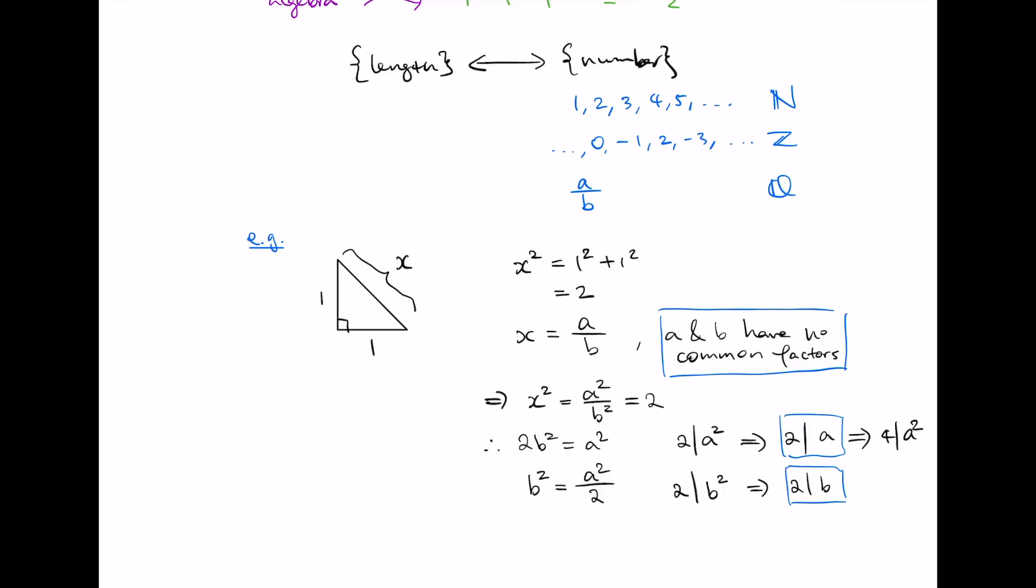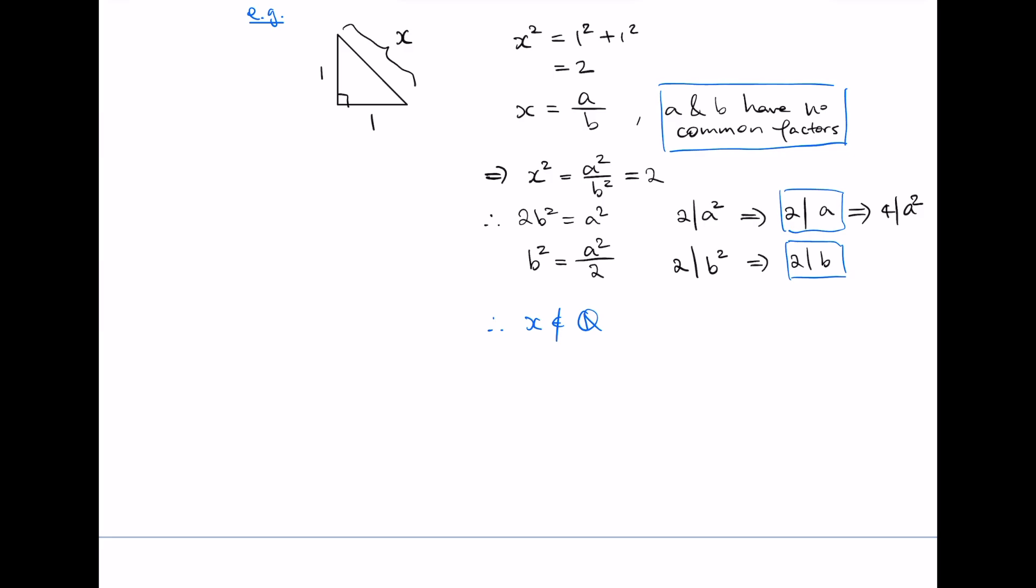Now, since every step of the derivation is correct, the assumption that we began with must be wrong. So this positive quantity x could not have been of the form a divided by b. Therefore, x is not in the set of rational numbers. And this, of course, is the famous proof that the square root of 2 is not a rational number.